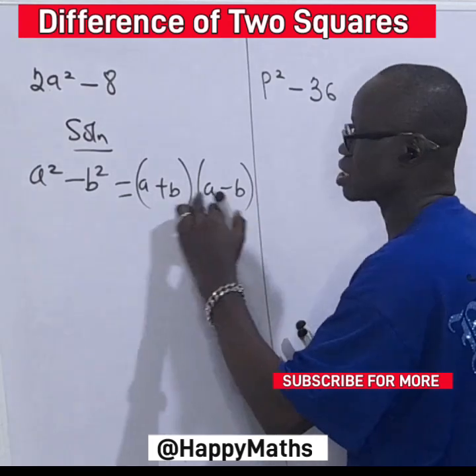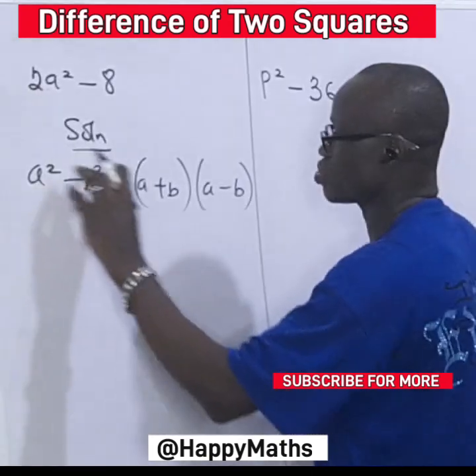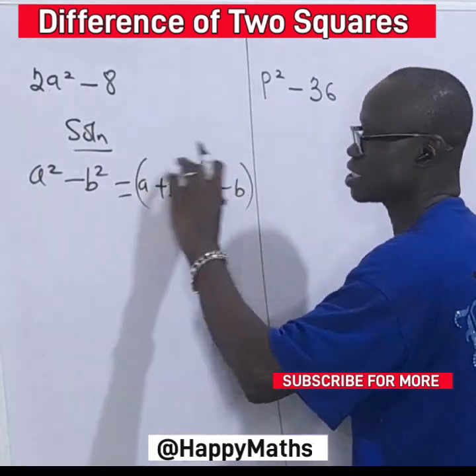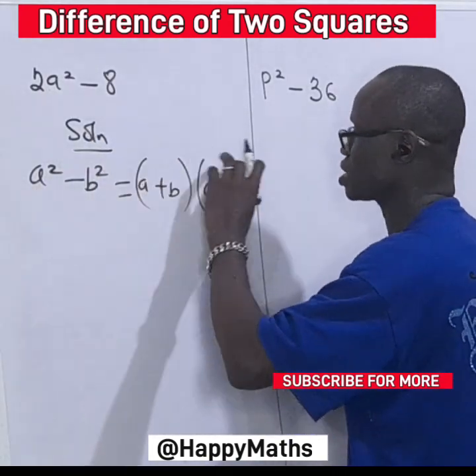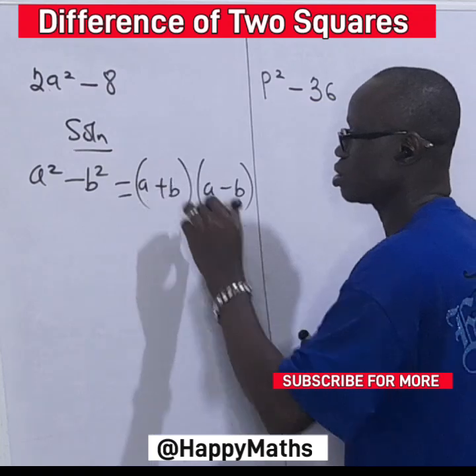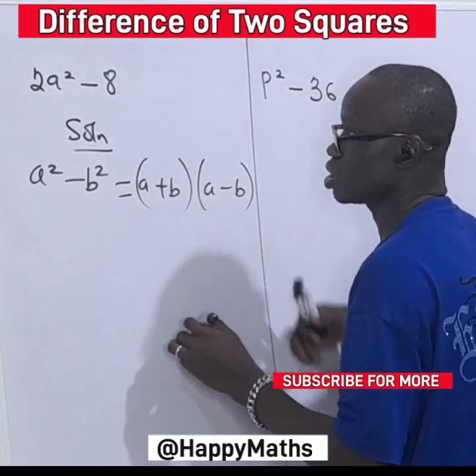A times a gives you a squared. A positive times a negative gives you a negative. And b times b gives you b squared.